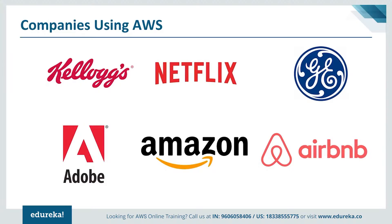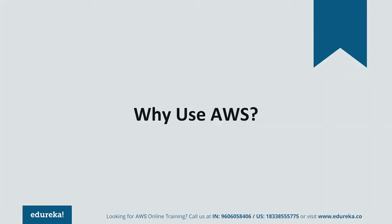Some very popular companies like Kellogg's, Adobe, Airbnb, General Electric, Netflix, and Amazon are using the AWS infrastructure for their operations. Netflix and Amazon are completely dependent upon the AWS infrastructure. You can imagine — if these two huge companies use it, your application is going to share the same infrastructure. So you can be assured your application is in safe hands.